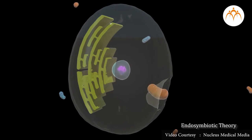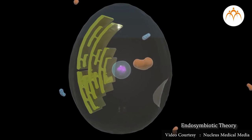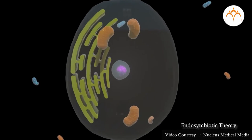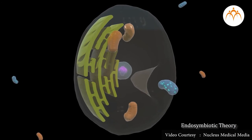Mitochondria formed when bacteria capable of aerobic respiration were ingested. Chloroplasts formed when photosynthetic bacteria were ingested.